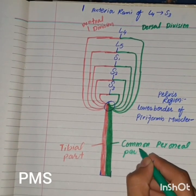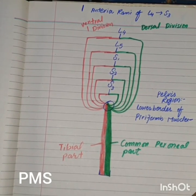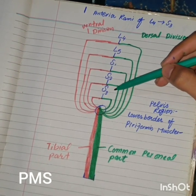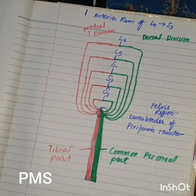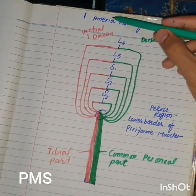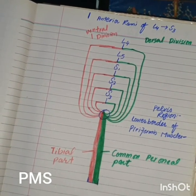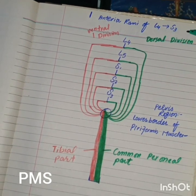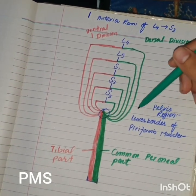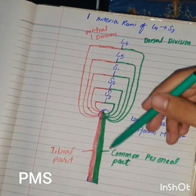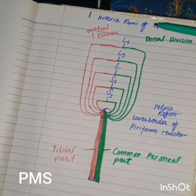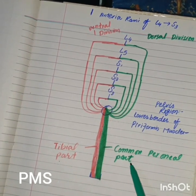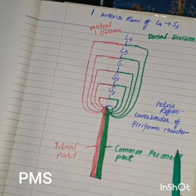Quick review: the sciatic nerve is the terminal branch formed from L4, L5, S1, S2, and S3 segments of the spinal cord, and it is the thickest nerve of the body. Its root value is the anterior rami of L4 to S3 segments. It is formed by the dorsal and ventral divisions of the anterior rami, which unite at the lower border of the piriformis muscle in the pelvis region. As it is formed from two divisions, it has two parts: the tibial part and the common peroneal part.